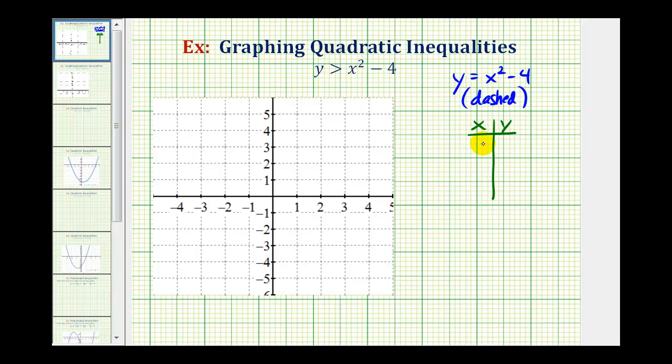Notice when x is zero, y would be zero squared minus four or negative four. When x is two, y would be two squared minus four, that's zero. And when x is negative two, negative two squared minus four is also zero. So our vertex is the point zero, negative four. One x intercept is the point two zero and the other x intercept is negative two zero.